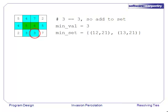Finally, the last cell we look at ties equal for minimum value so we add its coordinates to the set.